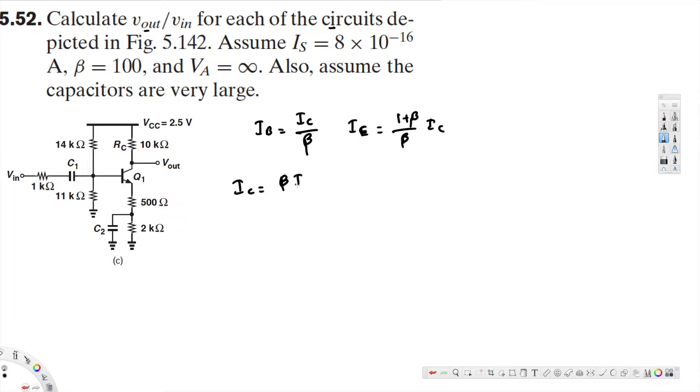If you apply KCL here, beta times I_B current is V_CC minus V_T ln of I_C over I_S minus 1 plus beta over beta times I_C R_E divided by R1.